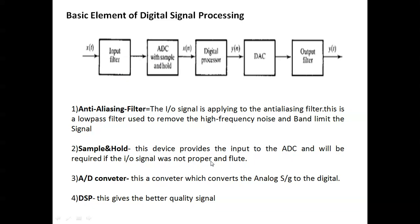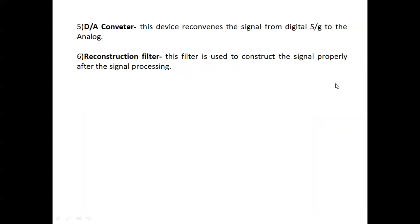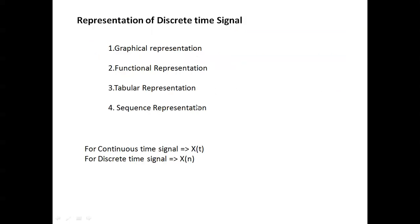The sample and hold circuit holds the input signal steady to get proper samples, which are then converted into a digital signal x(n). The continuous time signal is x(t) and the digital signal is x(n). The ADC converter includes the sample and hold circuit. The digital processor processes the signal and produces output y(n), which is then sent to a DAC, then through an output filter to produce y(t). The output filter is a reconstruction filter used to properly reconstruct the signal after processing.